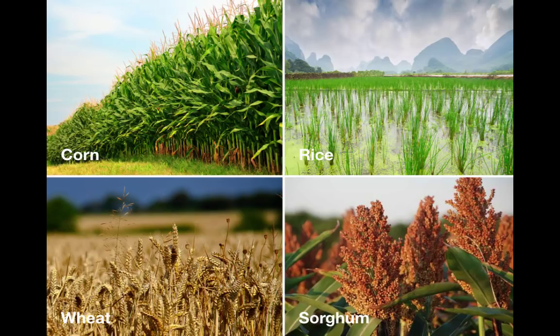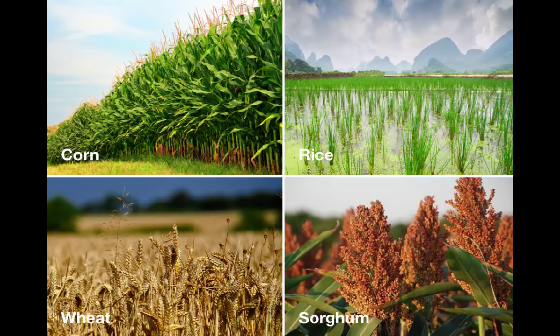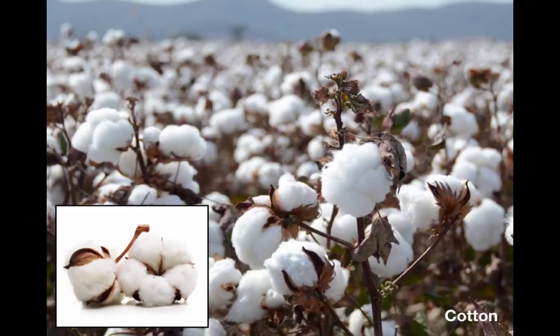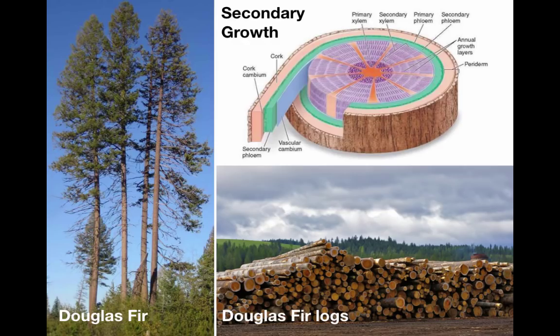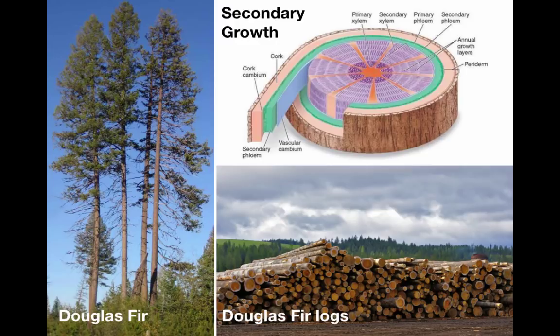With respect to food, there's the endosperm from four types of grasses that provide 50% of the calories that humans consume across the world: corn in the Americas, rice and its relatives in Asia, wheat and barley in Europe, and a lesser known grass called sorghum on the African continent. With respect to clothing, trichomes from the cotton plant provide most of the clothing that we wear. And finally, thanks to secondary growth, we've got the wood for our homes and other structures that we build.